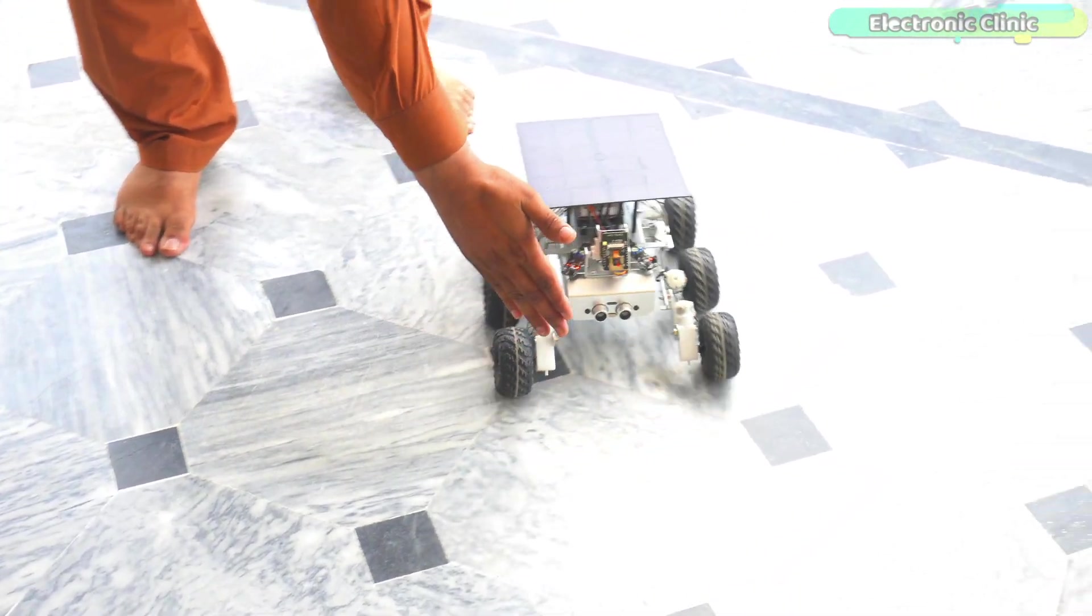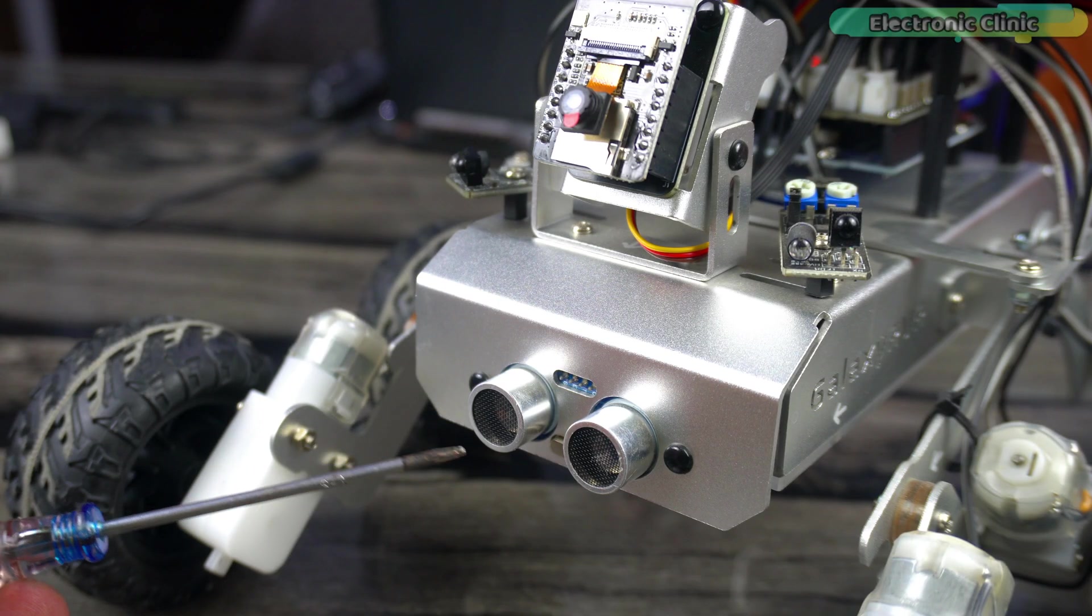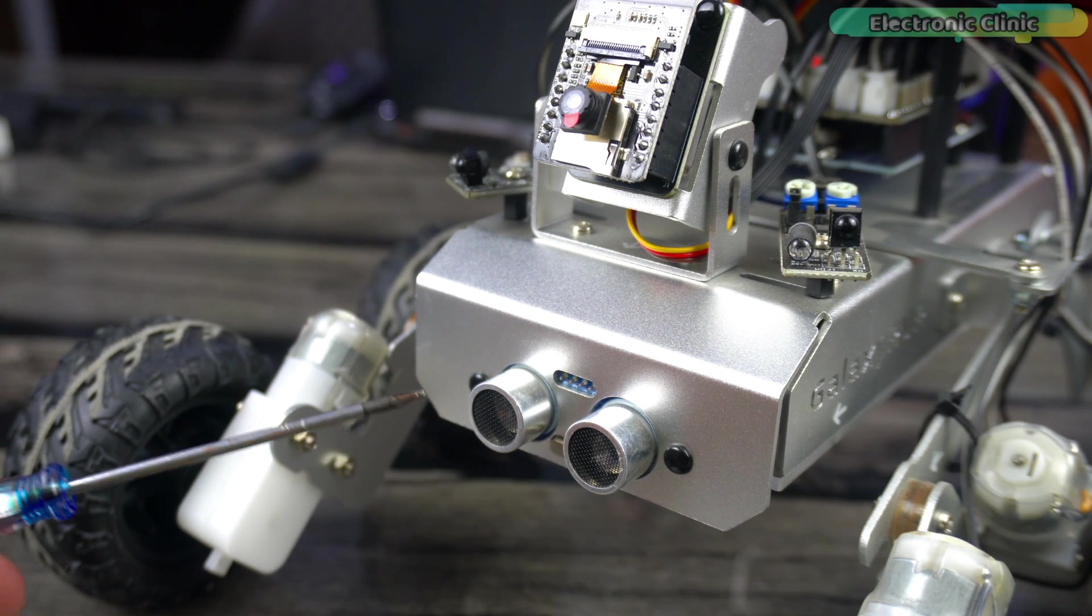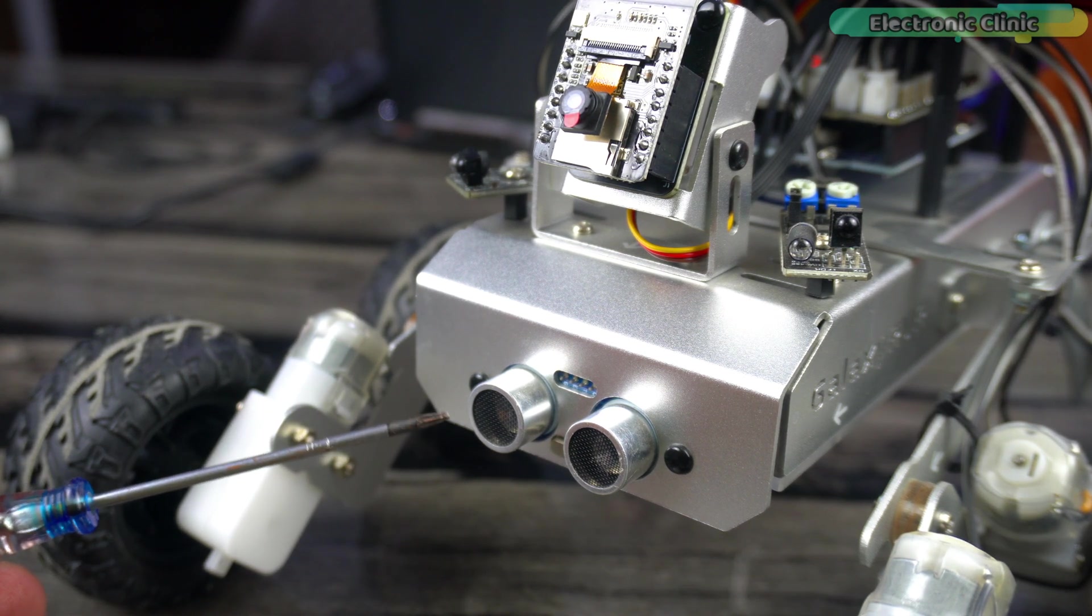After covering the IR sensors, next we are going to start with the HC-SR04 ultrasonic sensor installed on the front of the Galaxy RVR rover.